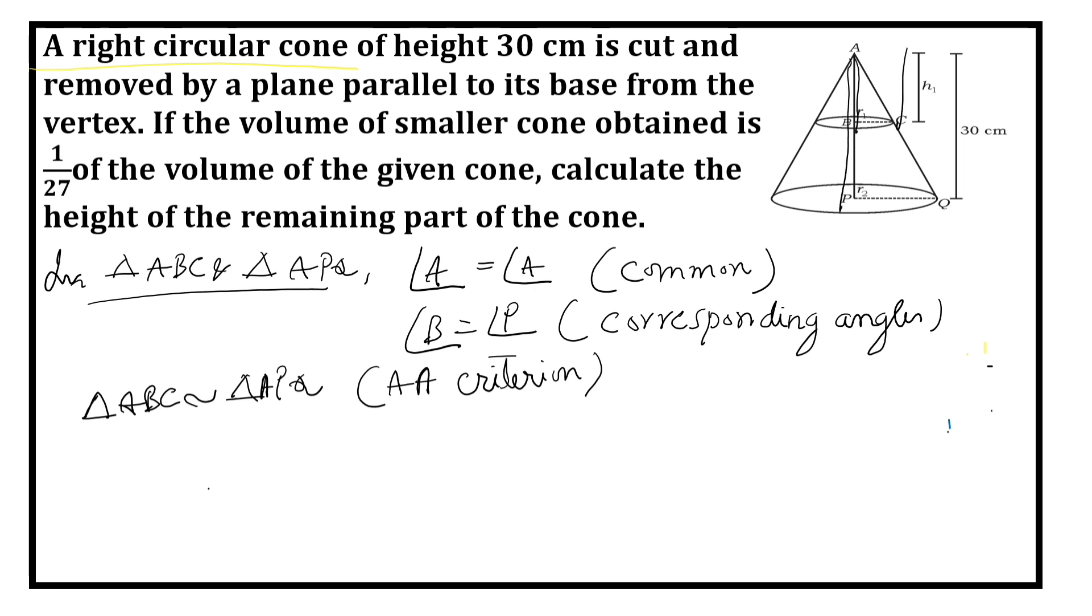What is AB? h1. What is AP? 30. So we can directly write h1 upon 30 is equal to r1 upon r2. We need not worry about L because we are asked only about volume, not surface area. So let this be equation 1.